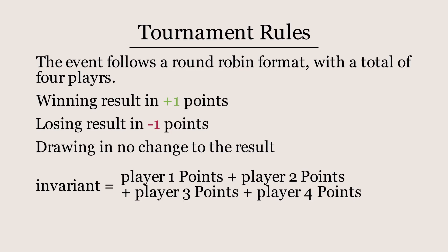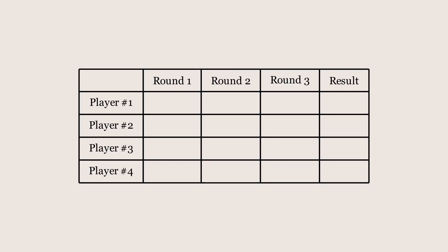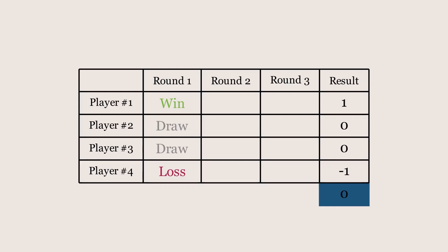To see that this is an invariant, let's follow the results of the games one by one. When the first game finishes — say, with player 1 beating player 4 — player 1 will gain a point while player 4 will lose a point. When summing all the points so far, the point of player 1 cancels that of player 4. And when the next game between players 2 and 3 ends with a draw, this too won't change the total sum, as neither player gained or lost any points.